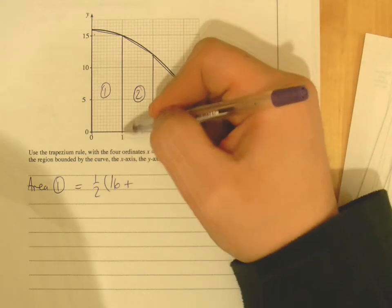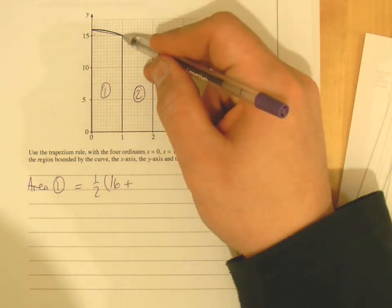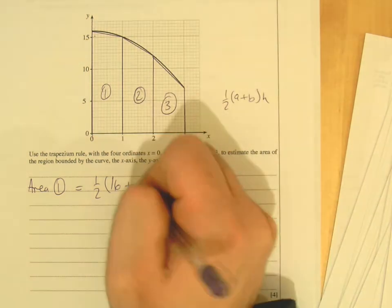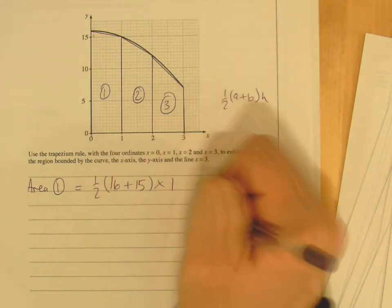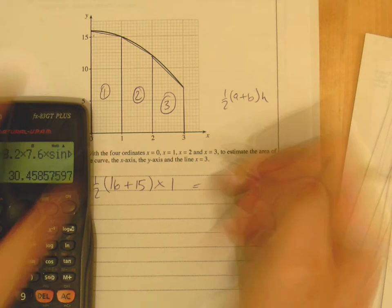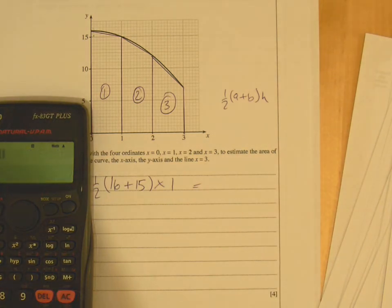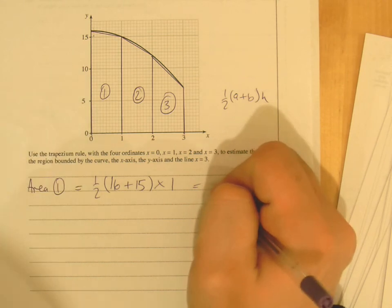Plus then your b, which is that length there, which is 15, and then h, times h, times the distance between them, which is 1. So, you know, use the calculator if it's in the calculator paper, this can come up in a non-calculator as well. So, 15.5.